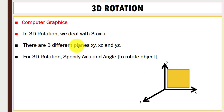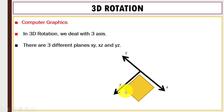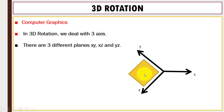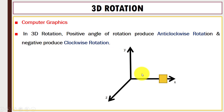In 3D we have three different types of planes: the x-y plane, the x-z plane, and the y-z plane. So in 3D rotation we have three axes — x-axis, y-axis, and z-axis — and we deal with three different planes: x-y plane, y-z plane, and x-z plane.